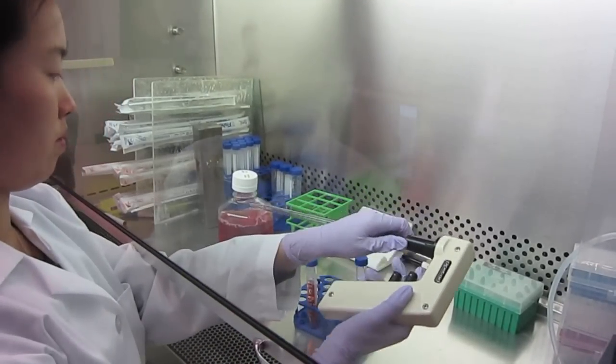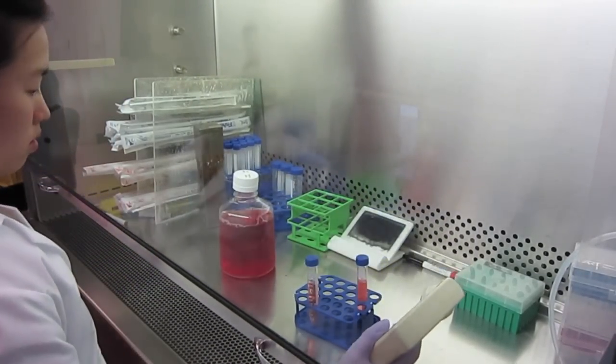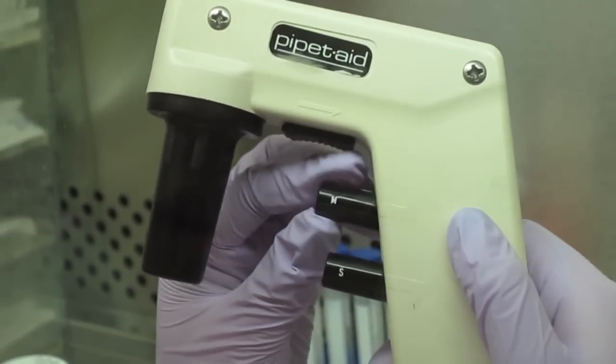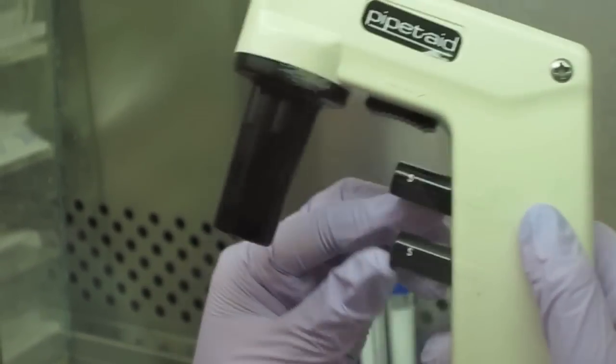When pipetting, it may be useful to adjust the aspirating and dispensing speeds. F for fast, M for medium, and S for slow.